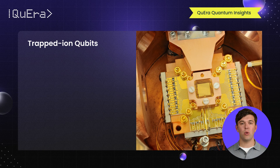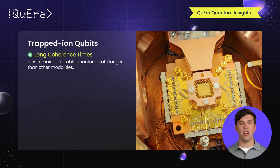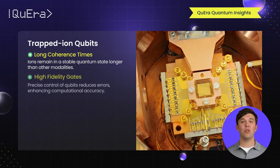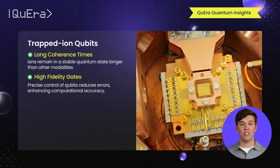Trapped ion quantum computing is known for its long coherence times and precision. In these systems, ions are trapped in place using electromagnetic fields, while lasers control their quantum states. Trapped ion qubits often exhibit high fidelity and low error rates, making them a good choice for high-precision applications.